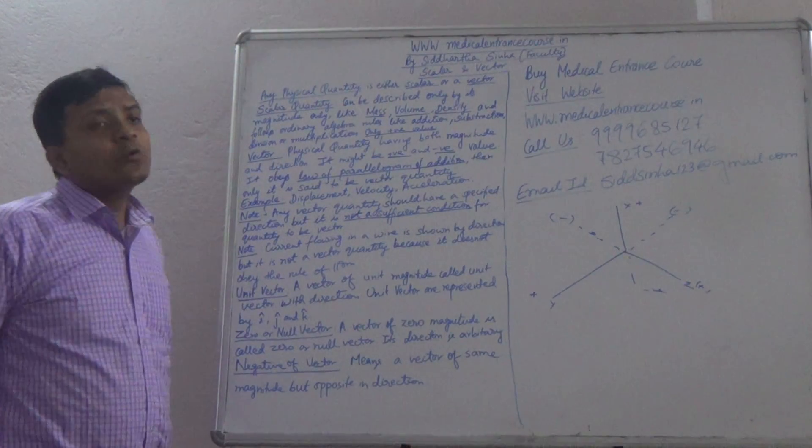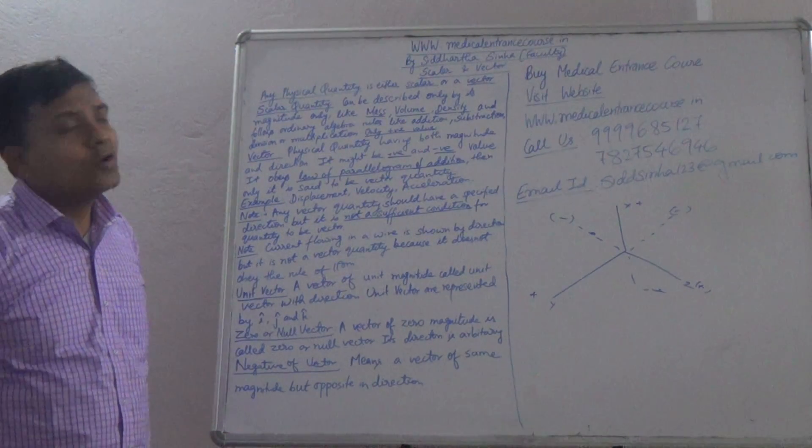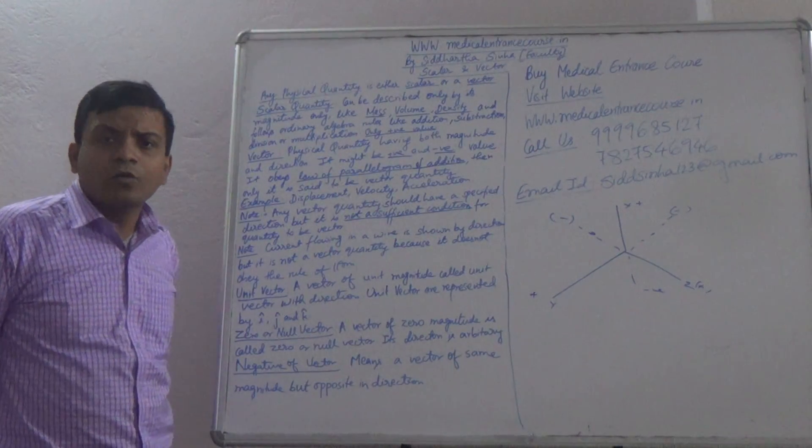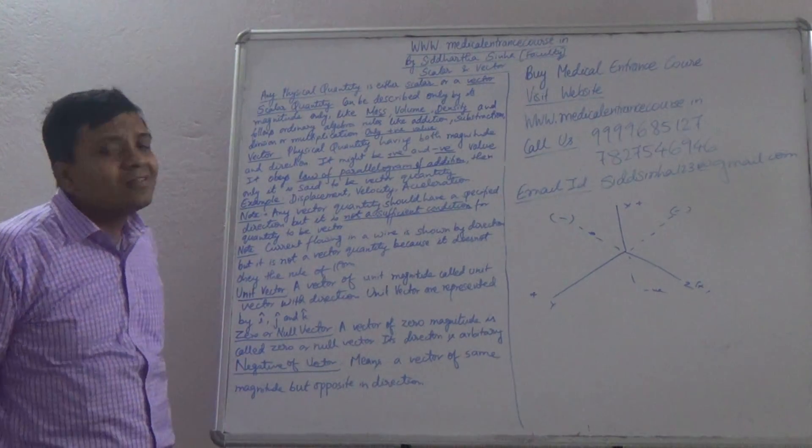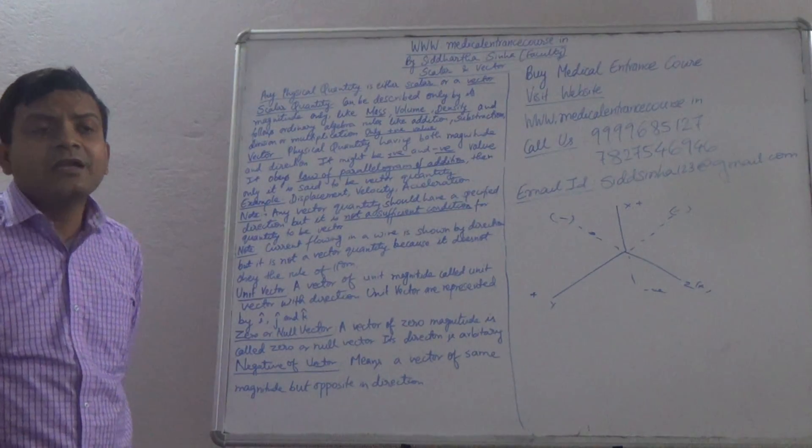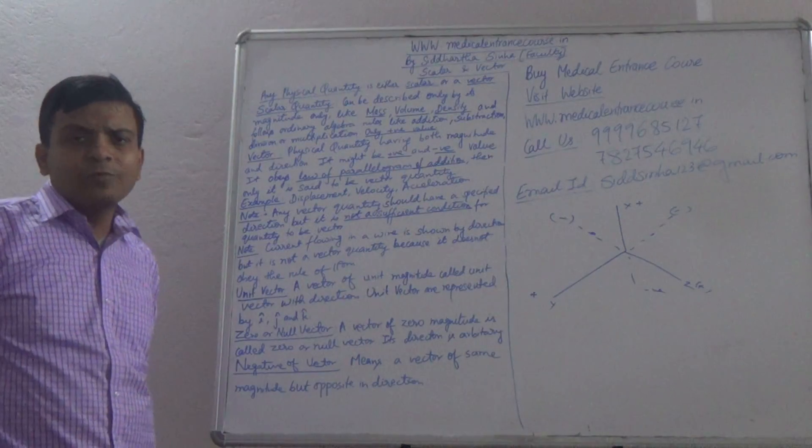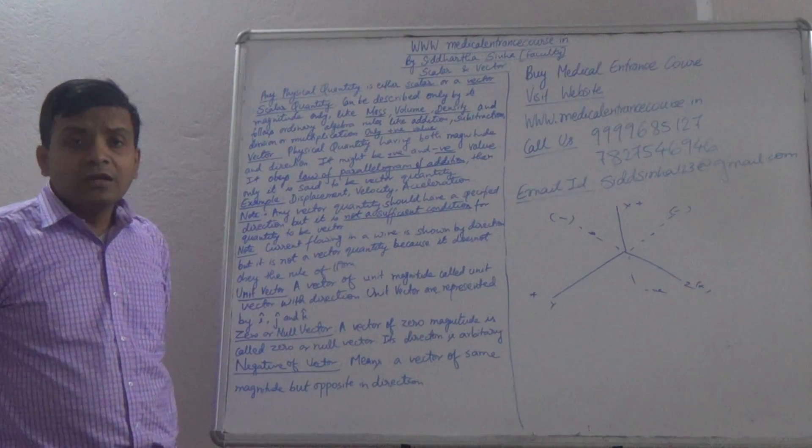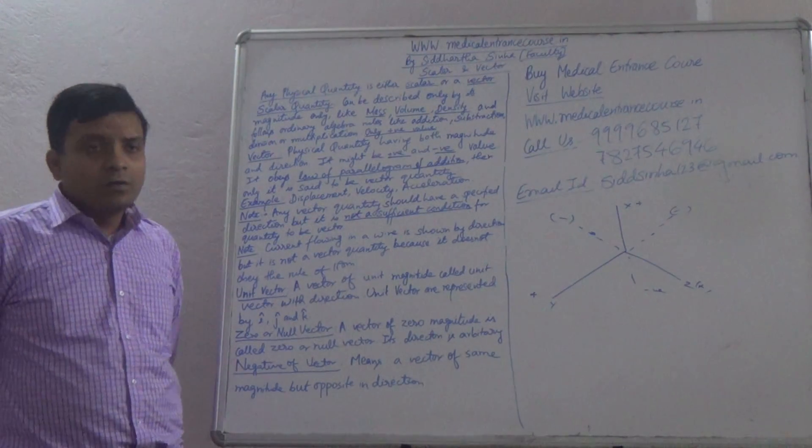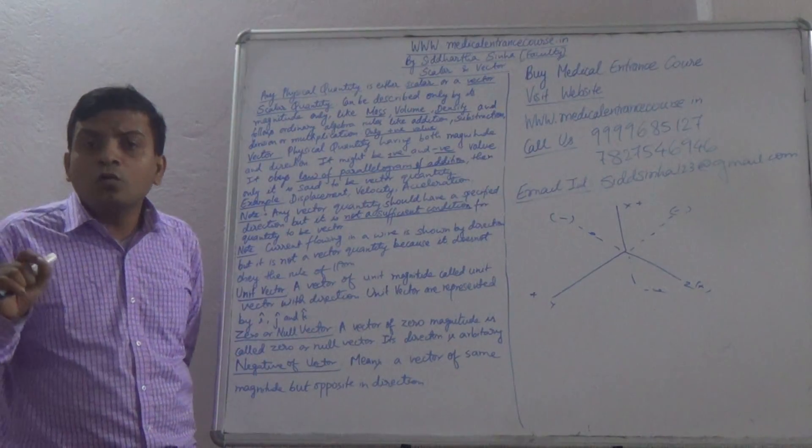Any physical quantity is either scalar or vector. So what does scalar quantity mean? Scalar quantity means that anything described as a physical quantity is called scalar if it has only magnitude. There is no direction.